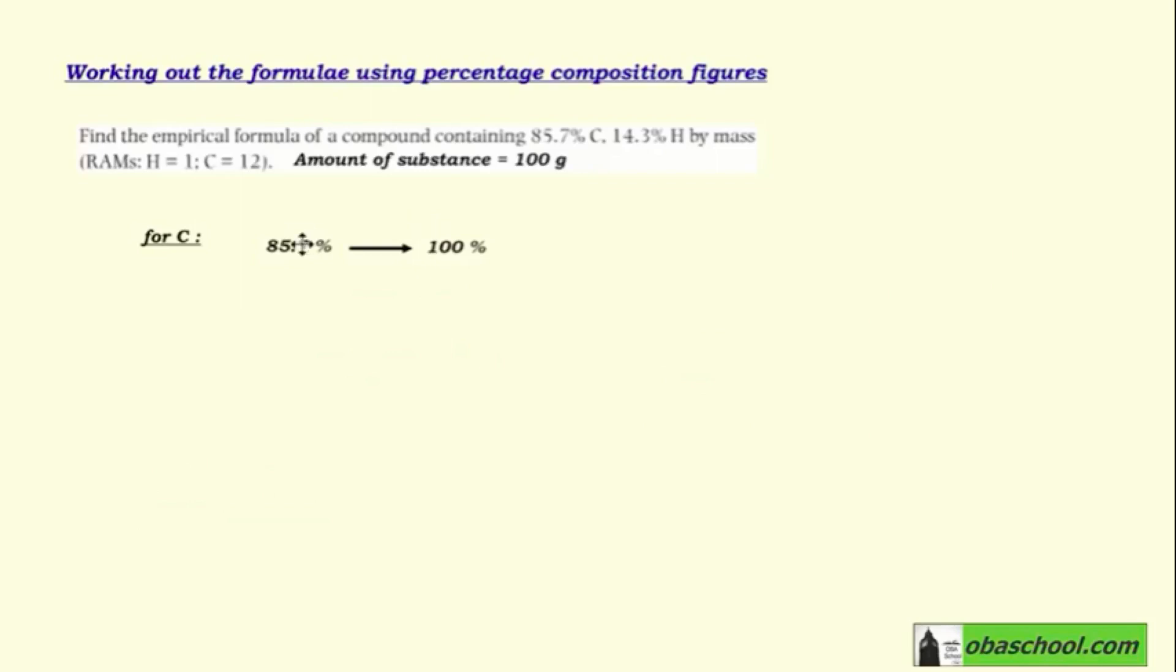If 85.7% corresponds to 100%, then in grams, how many grams of carbon will we have? We put 100 grams below the 100% and a question mark under 85.7% to calculate the amount in grams.